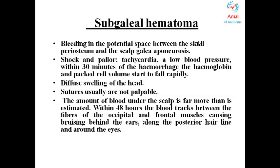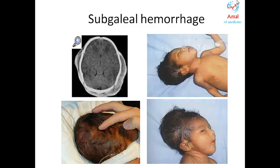Subgaleal hematoma is usually more evident at the occiput, and you can see the swelling at the occiput in the images shown. There may be skin discoloration and redness. It is very important to identify this hemorrhage because the infant can go into hemorrhagic shock, presenting with pallor, tachycardia, tachypnea, hypotension, and hypotonia. If the fluid accumulation is large enough, a fluid wave may be visible on the infant's head. The infant may also require phototherapy for hyperbilirubinemia.